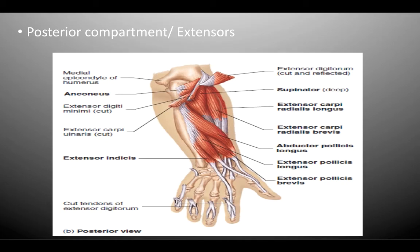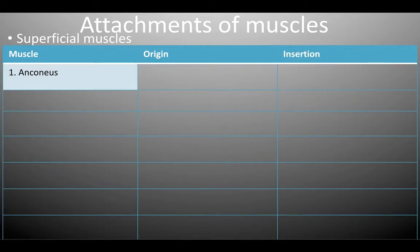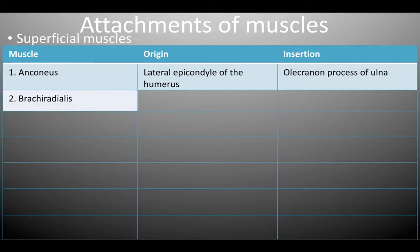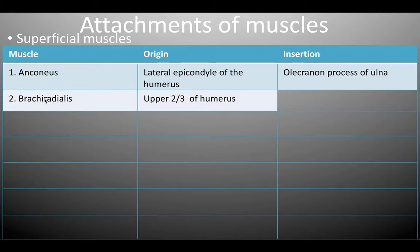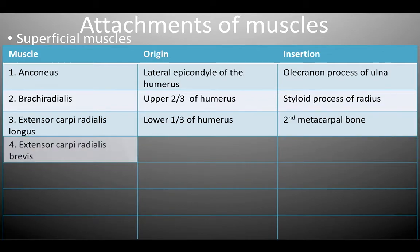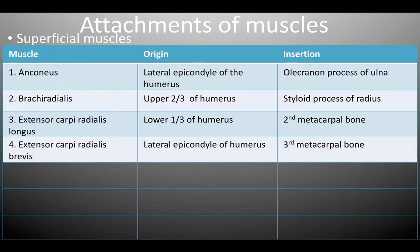In the posterior compartment, the extensors include the anconeus, extensor indicis, supinator, extensor carpi radialis longus, and others. In the superficial layer of the posterior compartment, the anconeus originates from the lateral epicondyle of the humerus, inserting into the olecranon process of the ulna. The brachioradialis originates from the upper two-thirds of the humerus, inserting into the styloid process of the radius. The extensor carpi radialis longus originates from the lower one-fourth of the humerus, inserting into the second metacarpal bone. The extensor carpi radialis brevis originates from the lateral epicondyle of the humerus, inserting into the third metacarpal bone.